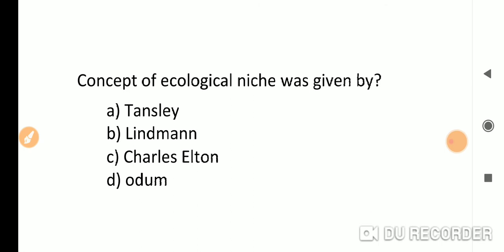The concept of ecological niche was given by Charles Elton, option C. Tansley gave the term ecosystem, Lindeman gave trophic level and 10% rule, and Odum is called the father of modern ecology. Charles Elton gave the concept of ecological niche and ecological pyramid.